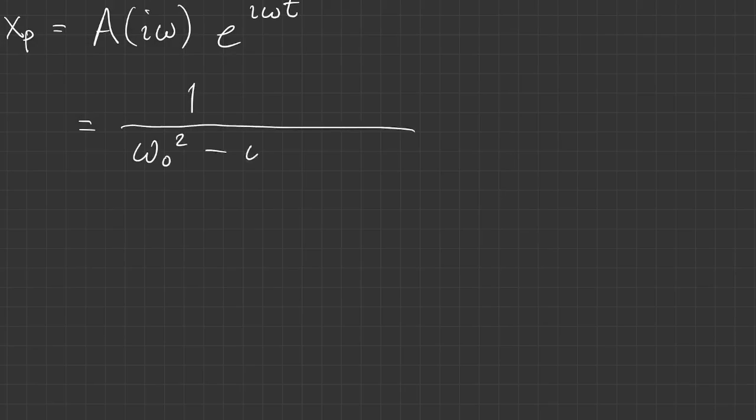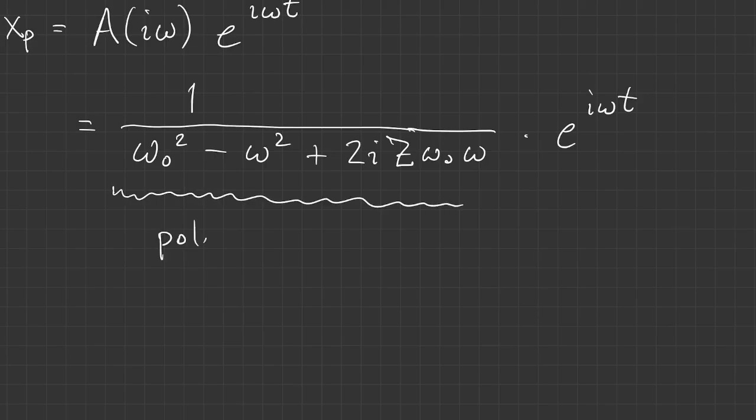So now if we have our solution, we already found what a is, so we'll just put in r equals i omega from the formula before. This leading term is complex, and often is useful to write it in polar form: the real g times e to the minus i phi.